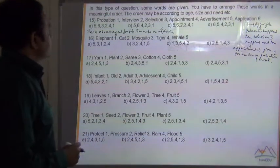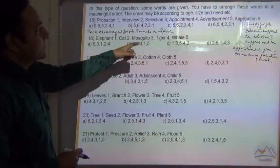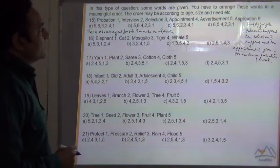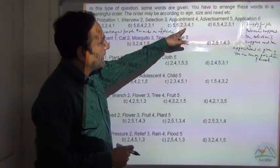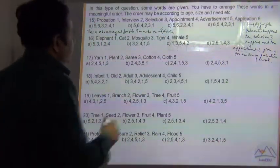So what is the sequence? Sequence is 5, 6, 2, 3, 4, and then 1. So your answer is C.